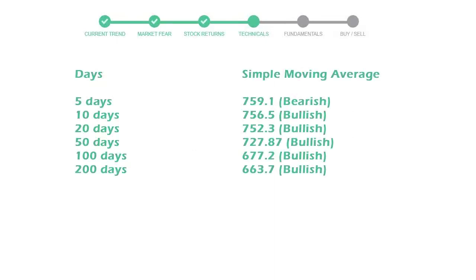Now let's have a look at simple moving average data. The moving average indicates what could be the next footprint of the stock price in the near future. The 5-day average is 759 with a bearish indication. The 10-day is 756 with a bullish indication. The 20-day average is 752, which is a bullish signal.